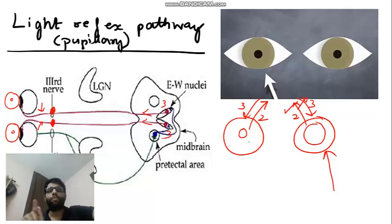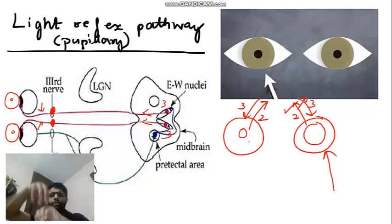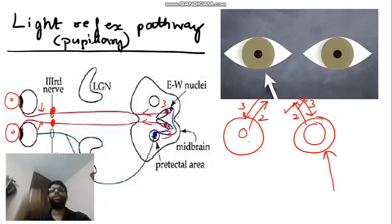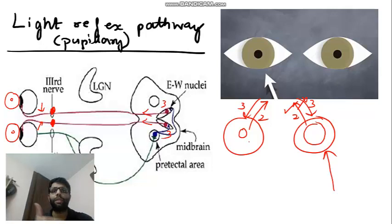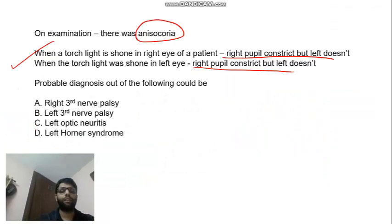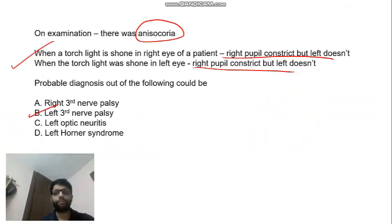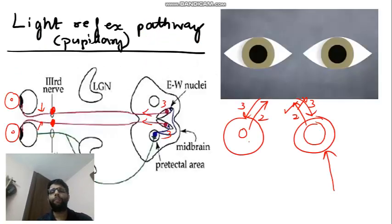In surgical causes of third nerve palsy — trauma, tumor, or aneurysm coming from above — the pupil fibers are affected because they are peripheral. That is why in surgical causes the pupil is dilated, while in medical causes (diabetes and hypertension) the pupil is normal. So pupil-sparing third nerve palsy is a medical cause, and left third nerve palsy is the answer for today.